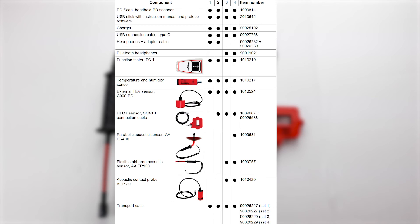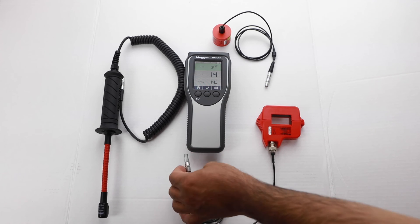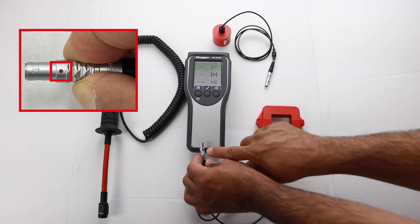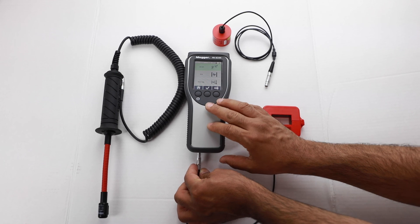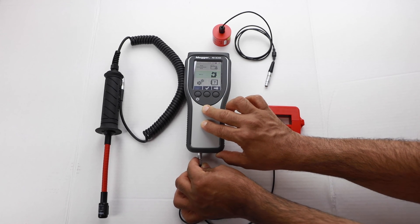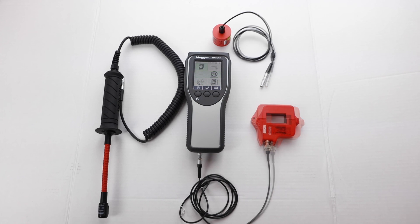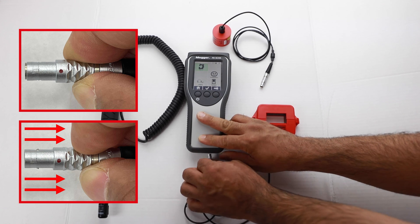The PD scanner has a number of different packages that come with different external sensors for a variety of tests. We will cover each of these sensors in another video. For now, we will connect a high frequency CT or HFCT to the test set. With the red dot facing up, we will plug the sensor into the bottom of the test set. Once we've installed the sensor, the menu will change to show that this new sensor is available. To disconnect the sensor, simply pull the spring back on the lead.